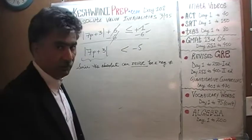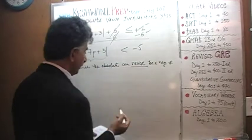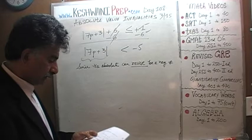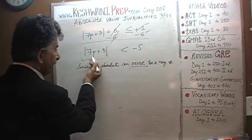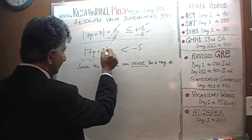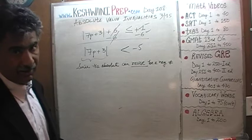Absolute value has to always be a positive quantity. Since the absolute value can never be a negative number, and here we are told that this has to be less than negative 5, since absolute value of 7P plus 3 has to be less than negative 5 and absolute value can never be a negative number let alone being less than negative 5, this tells us the solution to this inequality...